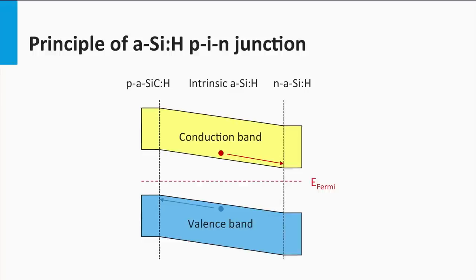Due to the relatively low diffusion length, both the p- and n-layers cannot be too thick. A wafer-based crystalline silicon solar cell is considered a diffusion solar cell, where diffusion is the dominant transport mechanism for the charge carriers in the absorber layer. An amorphous silicon solar cell is a drift device — the dominant transport mechanism in the absorber layer is drift.